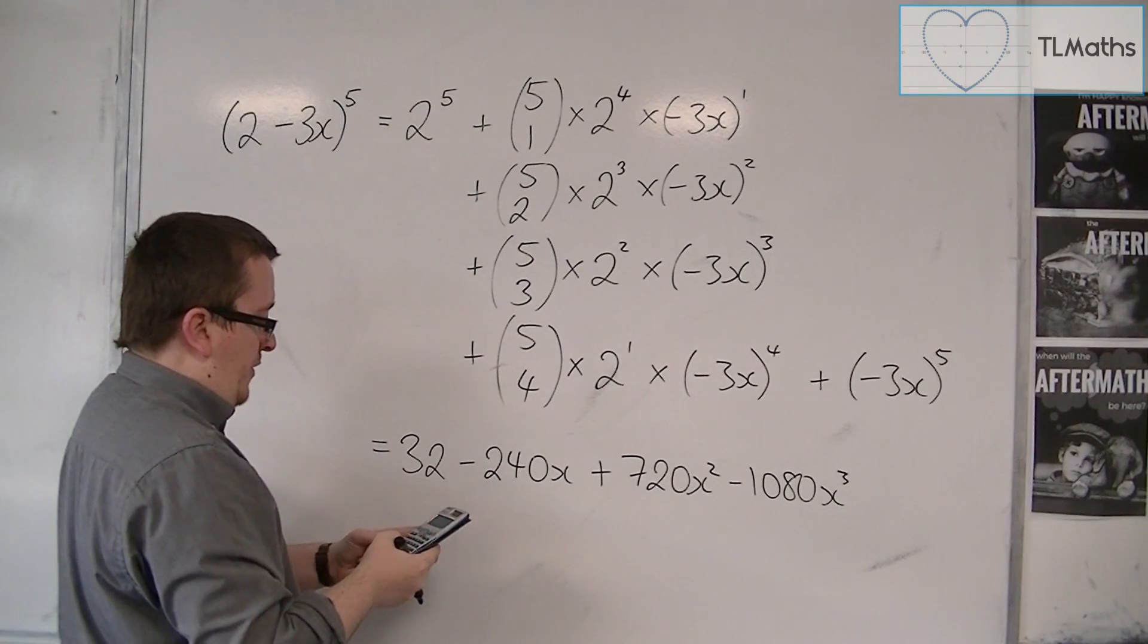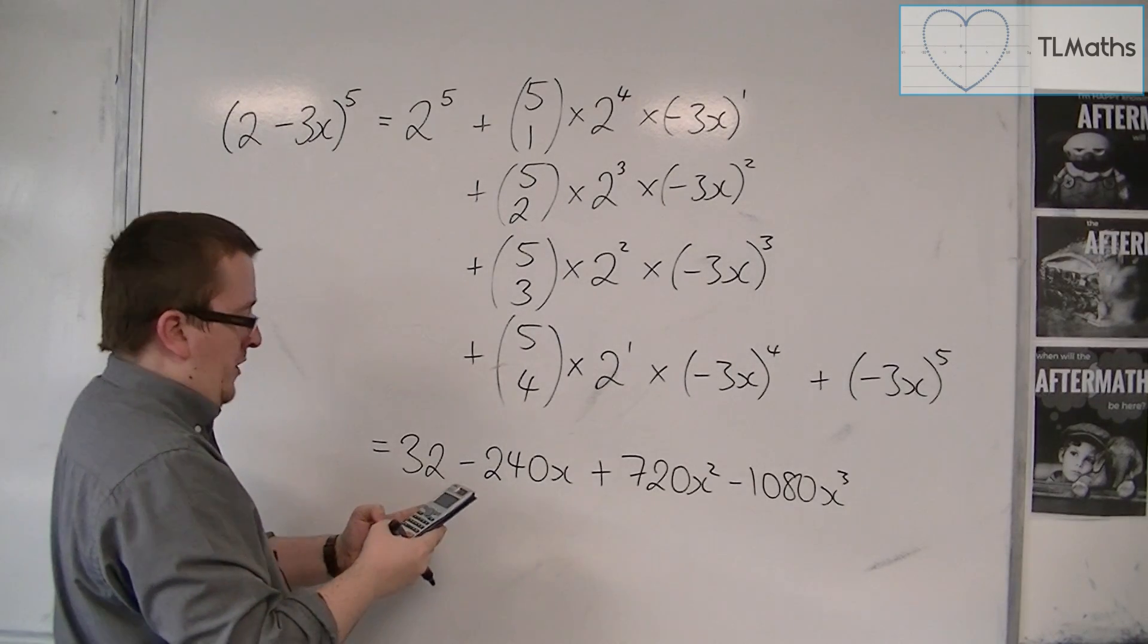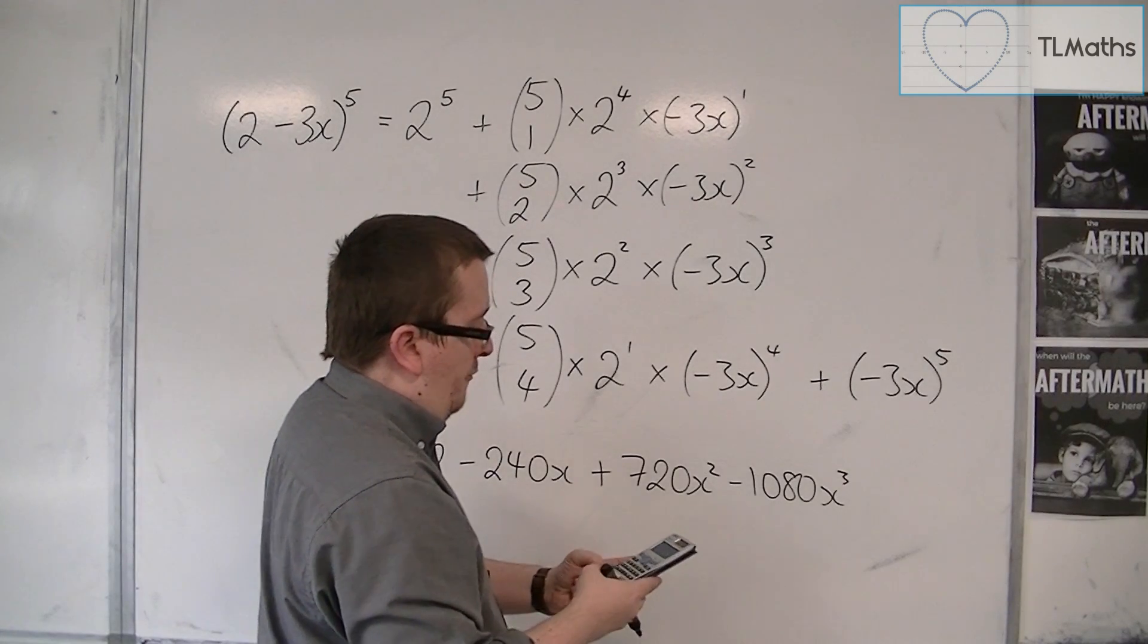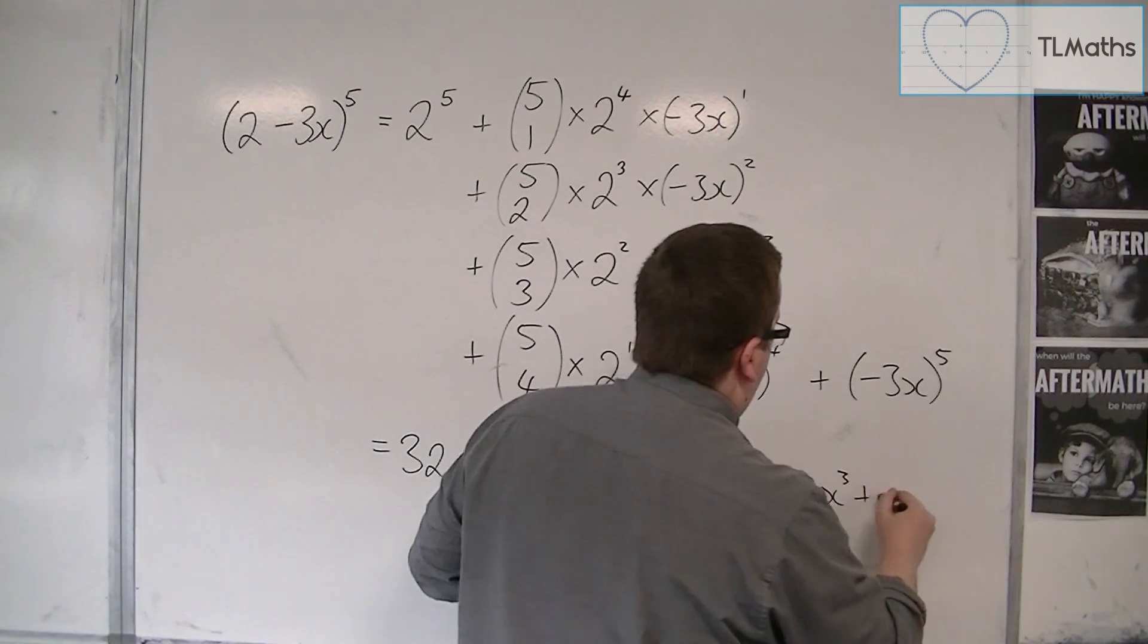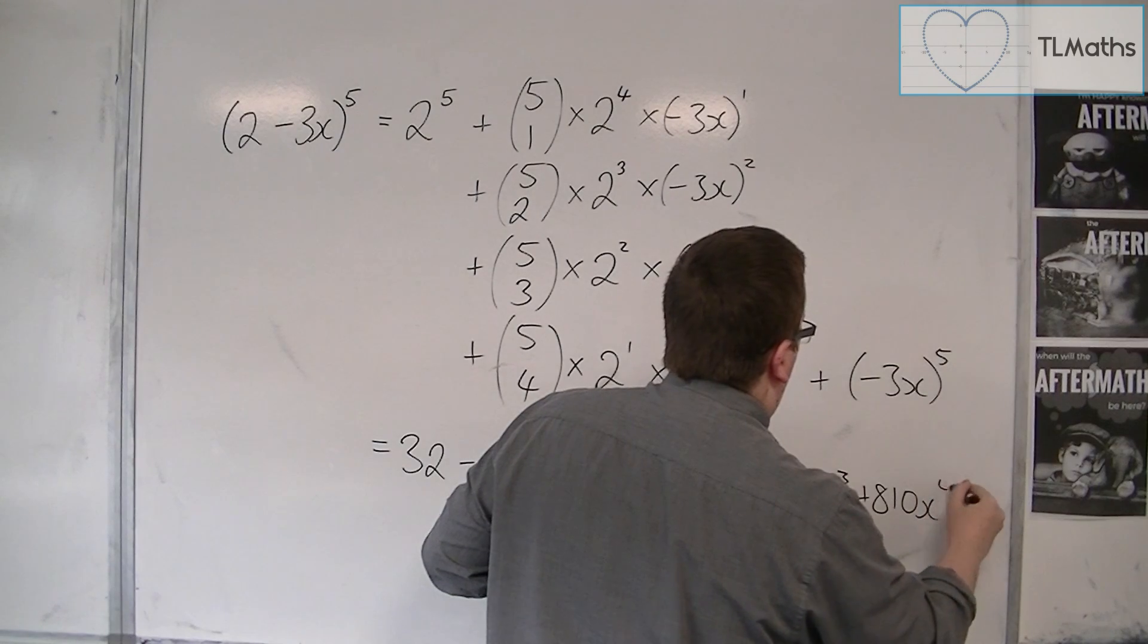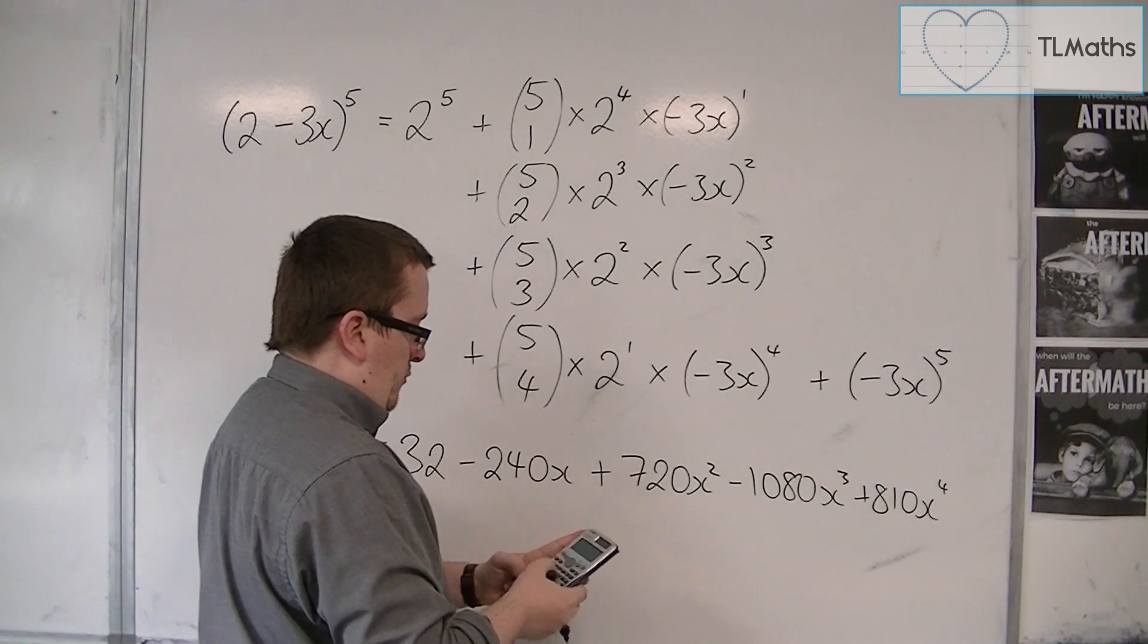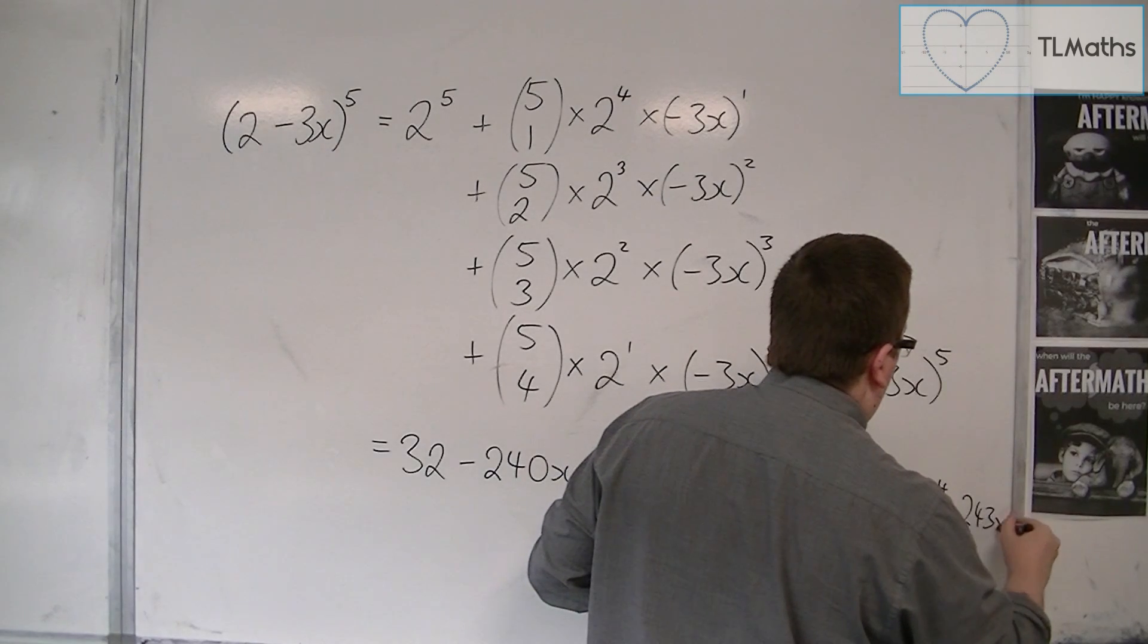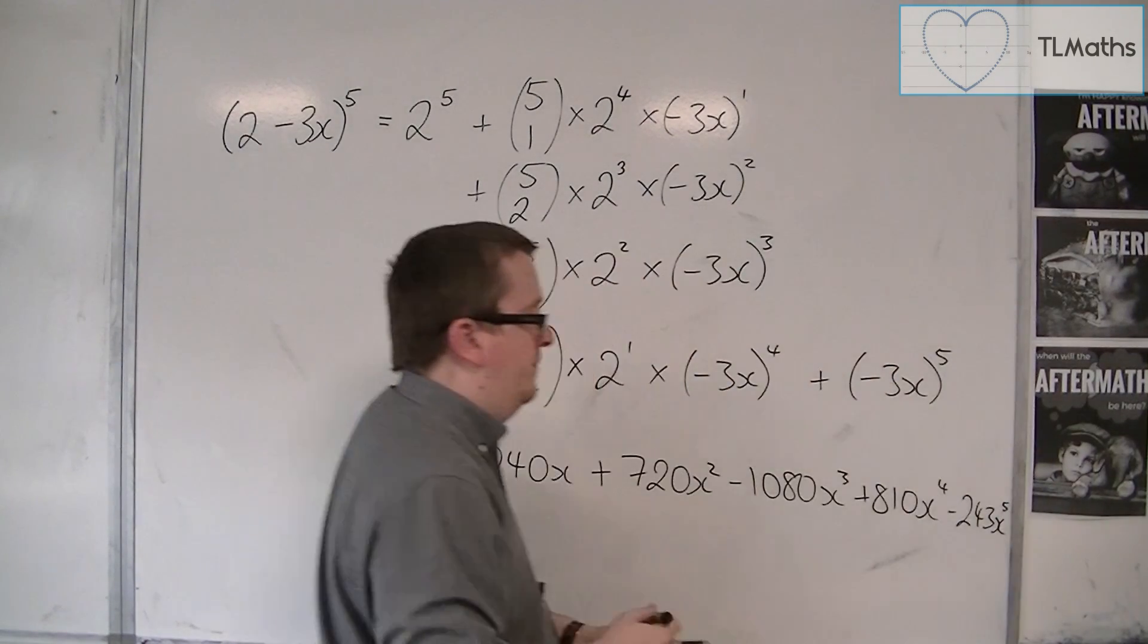Then we have this term, so 5 choose 4, times 2, times minus 3 to the power of 4, so that's 810x to the 4, and then finally minus 3 to the power of 5, minus 243x to the 5.